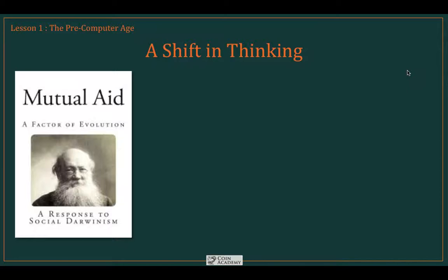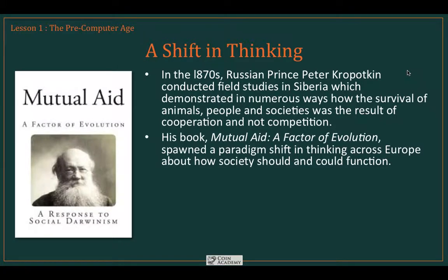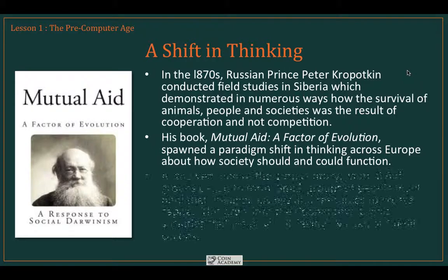Then we had the rise of social Darwinism, which believed, just like traditional Darwinian principles, that the strong would survive and that there was an evolution based on strength. But in the 1870s, along came Russian prince Peter Kropotkin. He conducted a number of field studies in Siberia, and those studies demonstrated that the survival of animals, people, and even societies was actually the result of cooperation and not pure competition. He wrote a book called Mutual Aid: A Factor of Evolution, and it spawned a paradigm shift in thinking across Europe about how society should and could function.